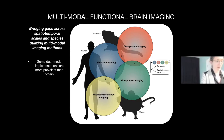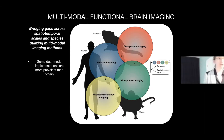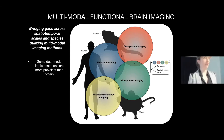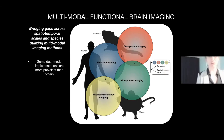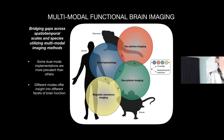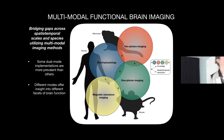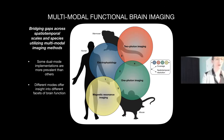Some dual-mode implementations are more prevalent than others. Two-photon and MRI have been theorized as combinable, but I'm not aware of any actual datasets yet — please correct me if I'm wrong because I'd need to talk to that person. Different modes offer different insights: the BOLD signal, optical fluorescence signals, electrophysiology signals — they're all measuring some form of brain function, which is this nebulous thing we're all working towards.